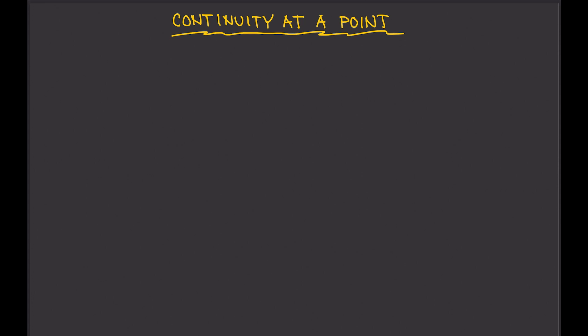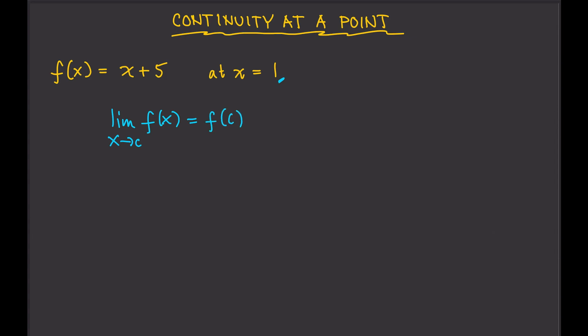For example, let's say the function is f(x) = x + 5, and the question is: is this continuous at x = 1? A function is continuous at a point if the limit of f(x) as x approaches c is equal to f(c). So what we will do first is try to find the limit of the function at x = c.